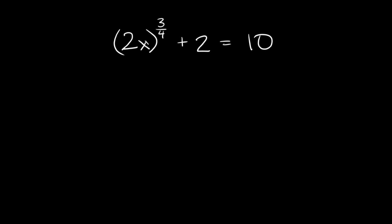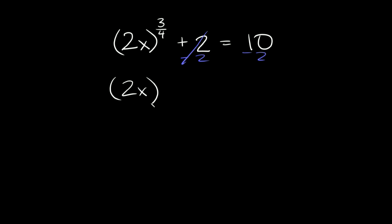We're just trying to solve for x here, so we want to isolate that. The first thing we can do is get rid of this plus 2 by subtracting 2 from both sides. So then we're left with 2x raised to the 3/4 is equal to 8.